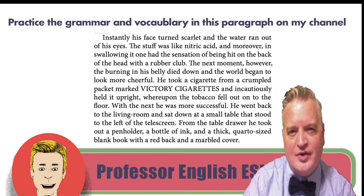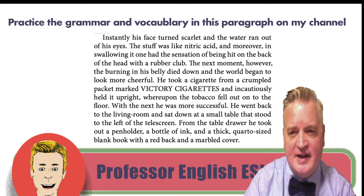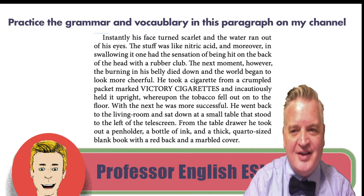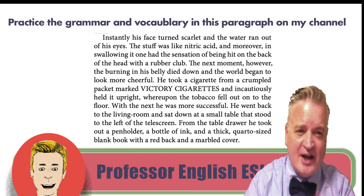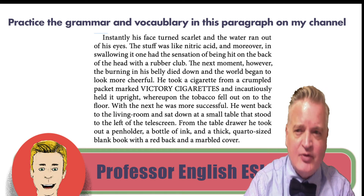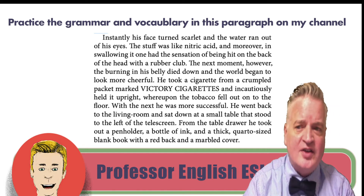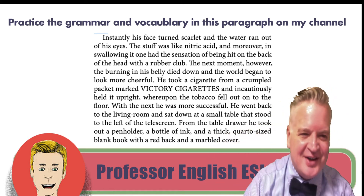Let's take a minute to review some of the words we've talked about and also review what is happening in the paragraph and in the story. In paragraph 10, remember Winston gulps down some victory gin. Gin is a very strong alcoholic drink, and this is very bad tasting gin. Instantly his face turned scarlet — scarlet is a type of red — and the water ran out of his eyes. The stuff was like nitric acid. Moreover, in swallowing it, one had the sensation of being hit on the back of the head with a rubber club. So when you swallow the victory gin, it seems to hit you in the head somehow.